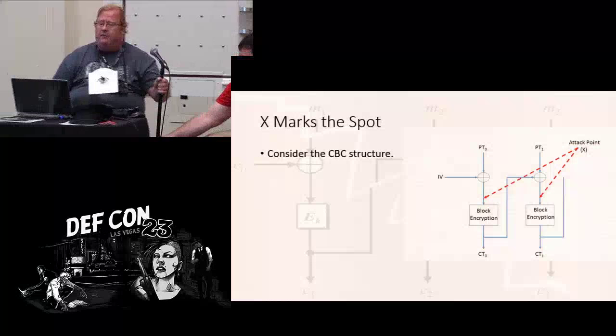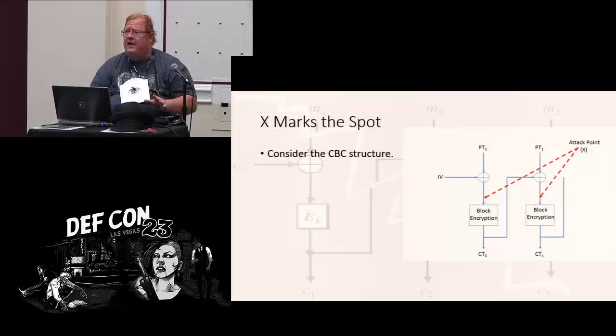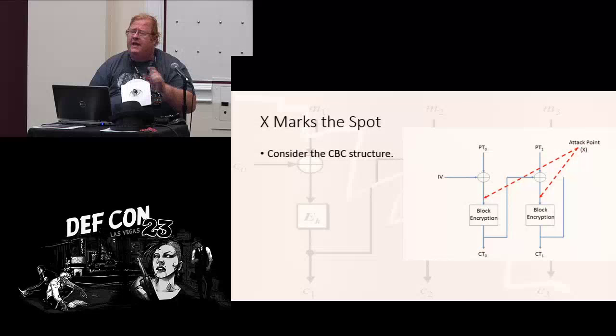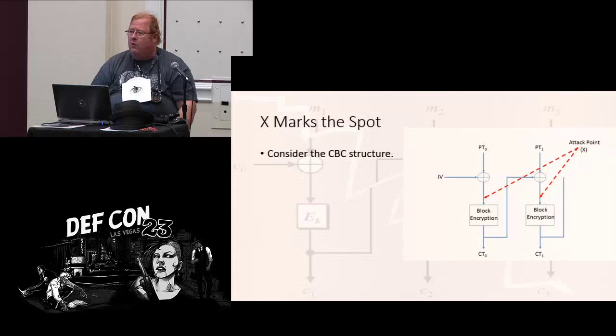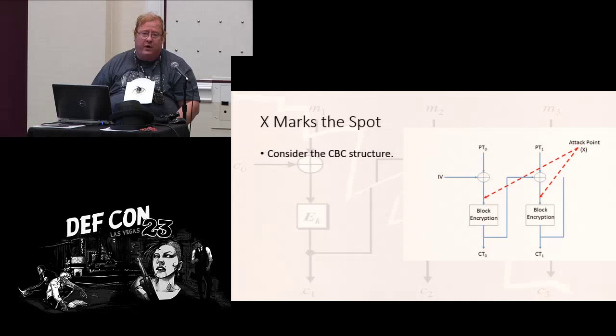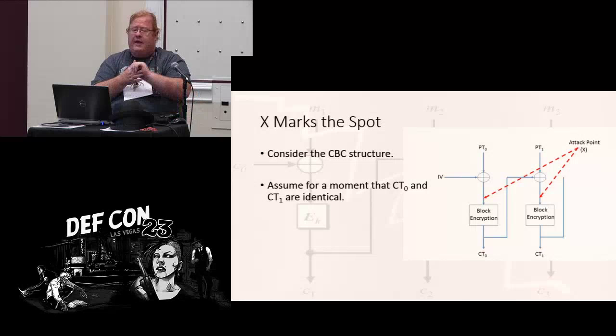The two secrets of CBC are going to be the key and the initialization vector. Those are the two things you would need to unencrypt the file. But when we looked at it, the IV, basically, you don't actually need it. The IV is often not necessary to unencrypt. You really just need that key. It often provides confusion, because everyone thinks you're going to need that key and the initialization vector to open it. But you really don't.